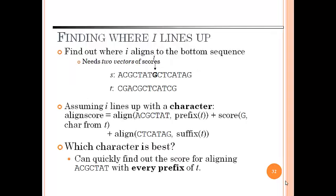Find out where i aligns to the bottom sequence. This is the two DNA sequences that are given. Assuming i aligns up with a character, then alignment score is the alignment of the sequence prefix and score plus alignment of the sequence suffix. Which character is best can quickly be found by determining the score for aligning the given sequence with every prefix of T.